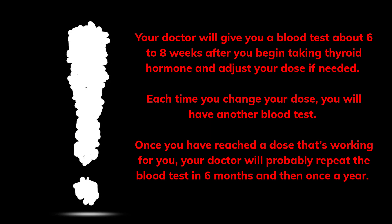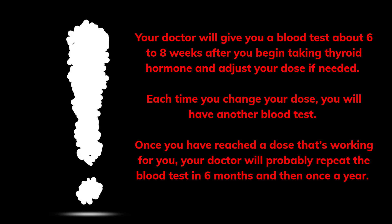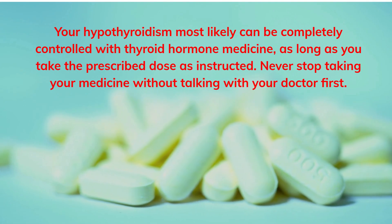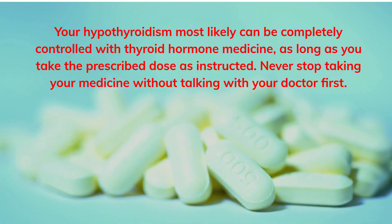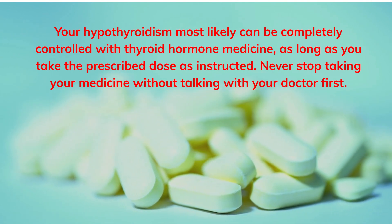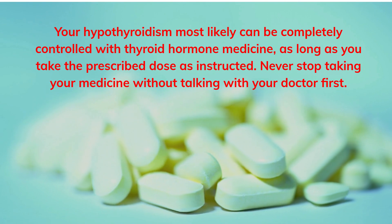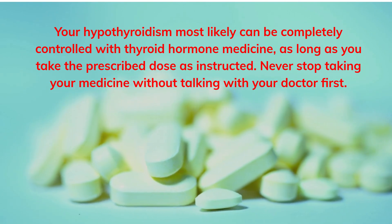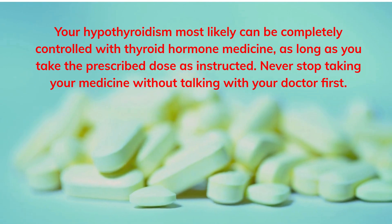Each time you change your dose, you will have another blood test. Once you have reached a dose that is working for you, your doctor will probably repeat the blood test in 6 months and then once a year. Your hypothyroidism most likely can be completely controlled with thyroid hormone medicine, as long as you take the prescribed doses as instructed. Never stop taking your medicine without talking with your doctor first.